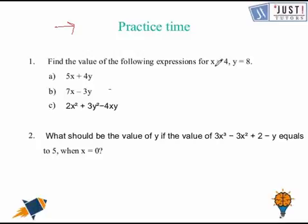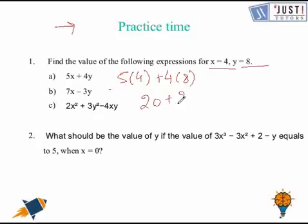So in question number 1, we have been given that the value of x is 4 and y is 8. So what do we need to do? 5x, we put 4 in place of x, then add 4y and we put 8 in place of y which gives us 20 add 32 which gives us 52 as an answer. So the answer for question number B is 4. Answer for question number C is 96.